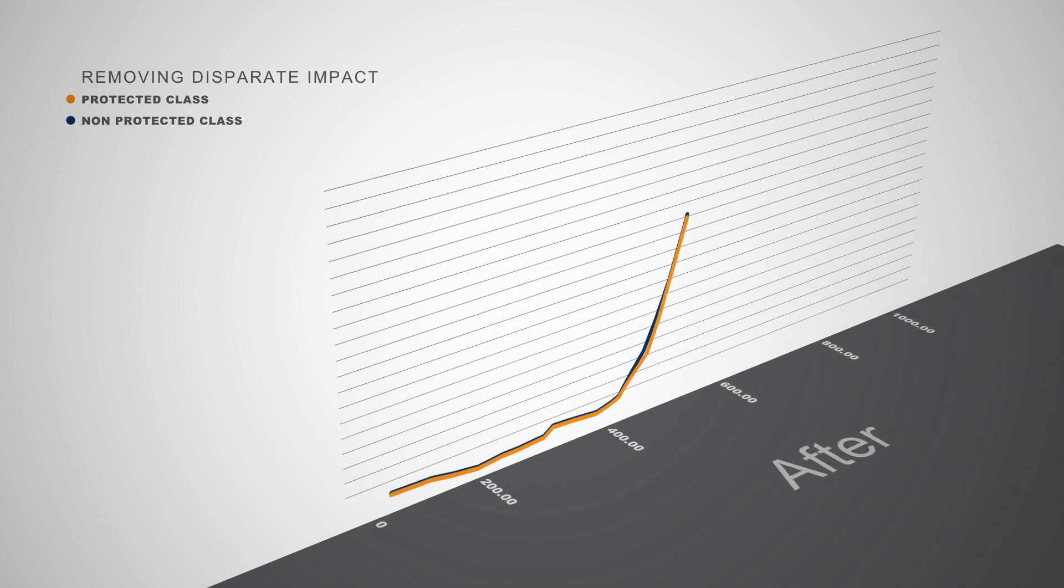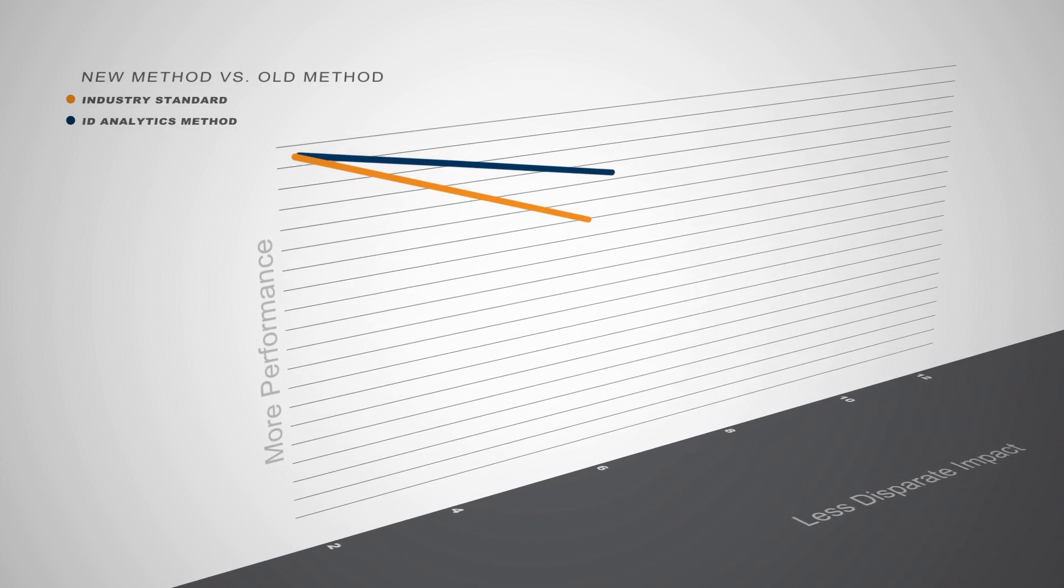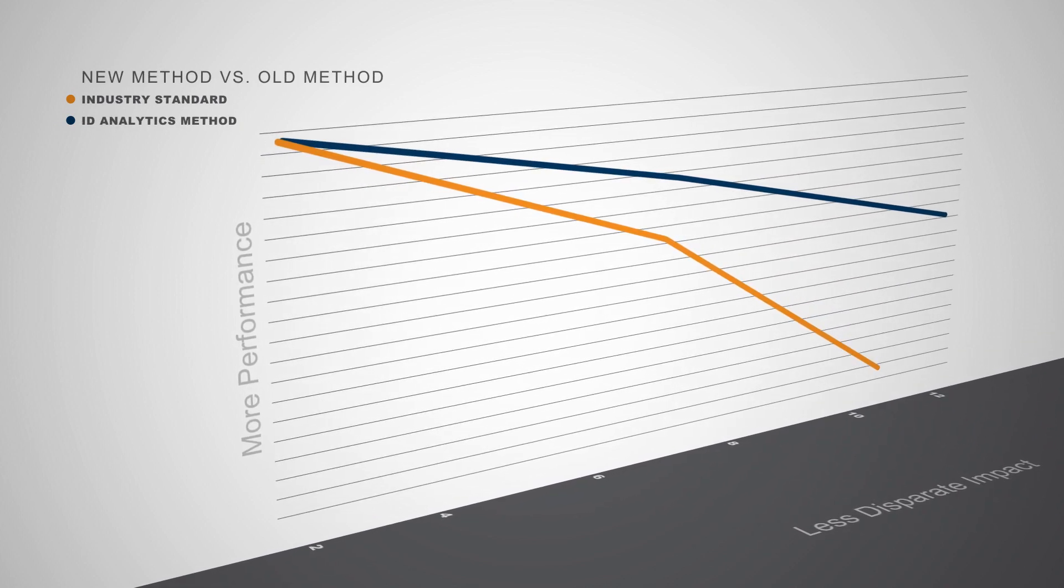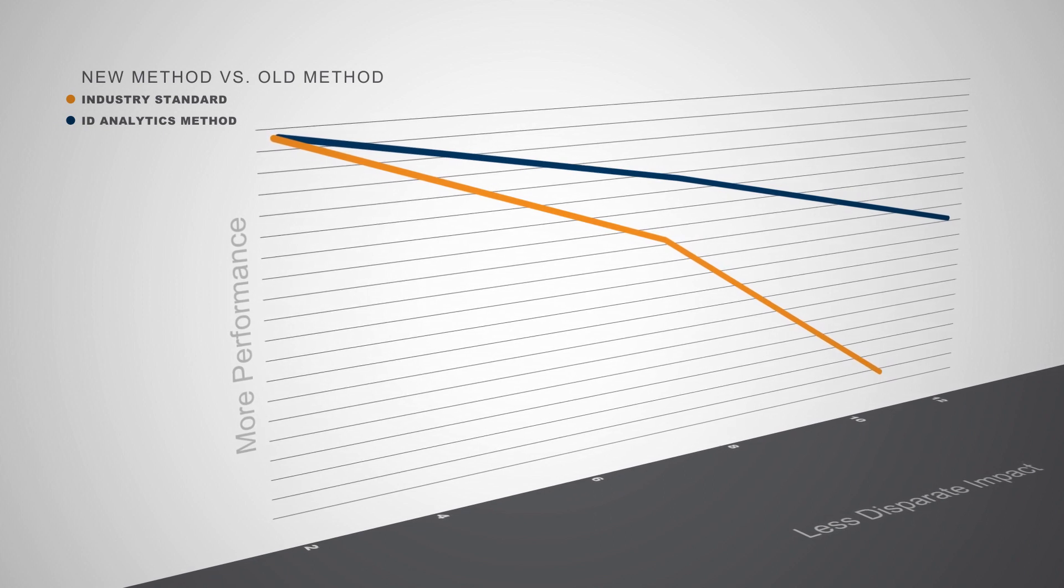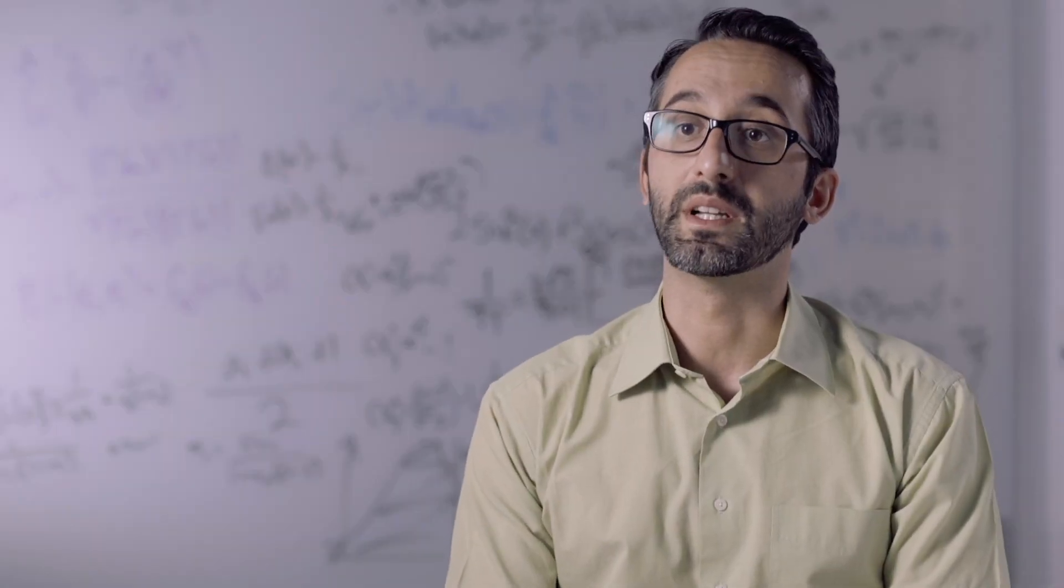In the next picture you can see that these two are pretty much on top of each other. This is after we apply this method. What we see here are two lines, the blue being the new method and orange being the old method. As you can see the blue always stays on top of the orange and as we reduce disparate impact the performance doesn't drop nearly as much.